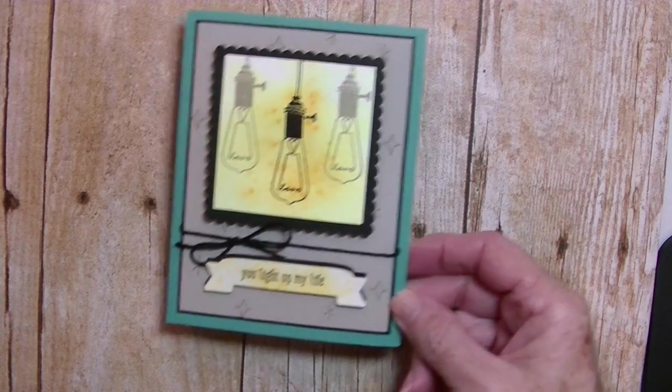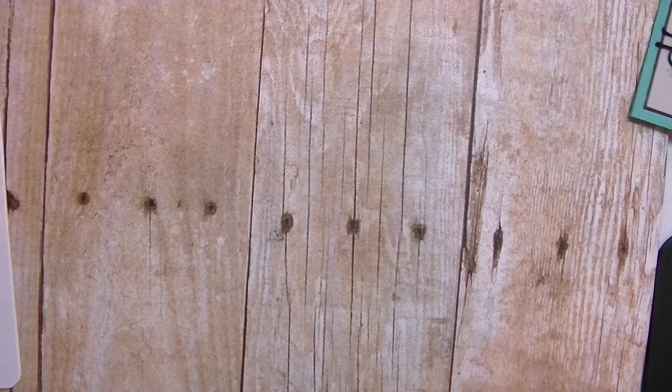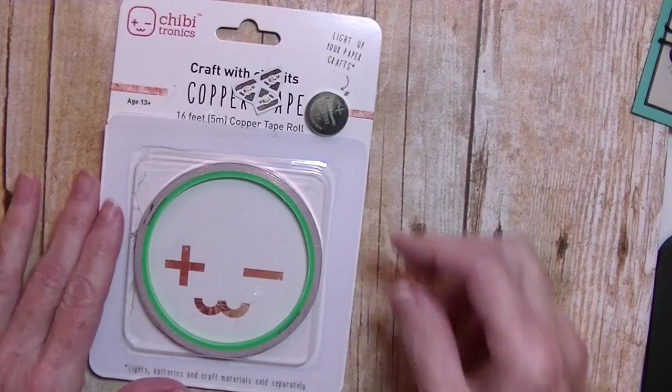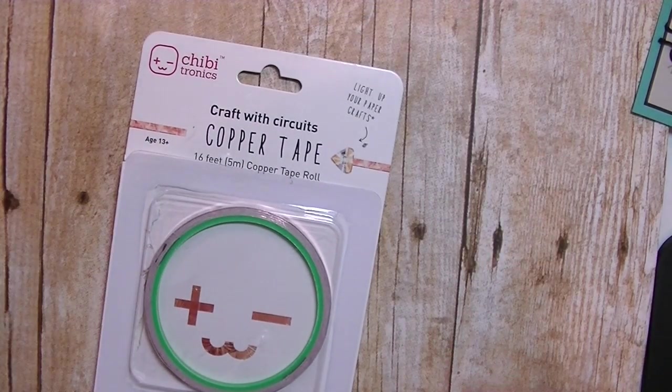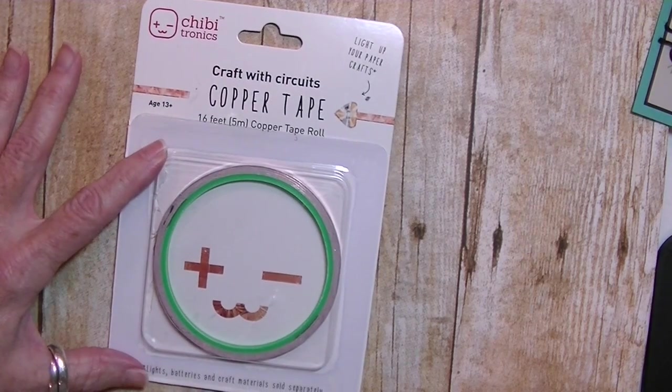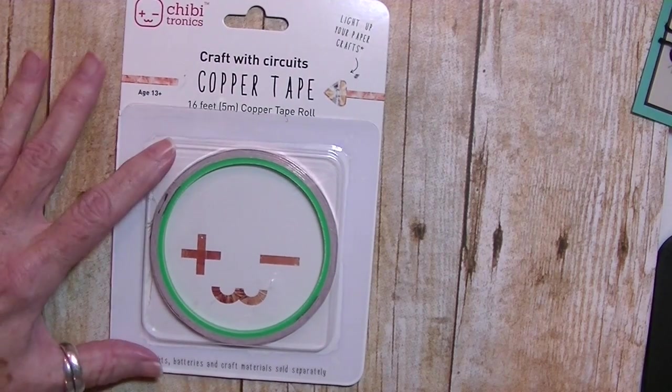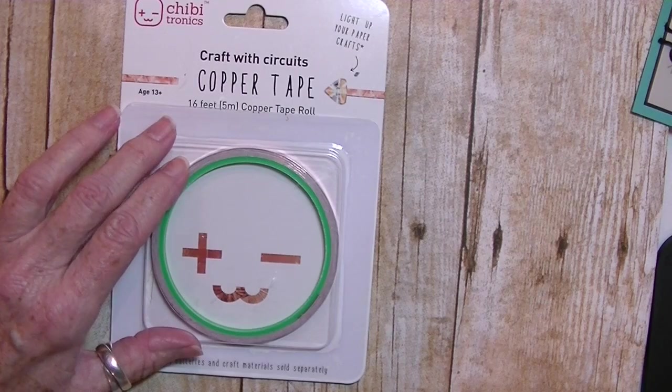I'm going to show you what I've added to my normal stamping. I've added some product from Chibitronics. This is the Chibitronics copper conductive tape and you'll need that. You're actually going to make a circuit.